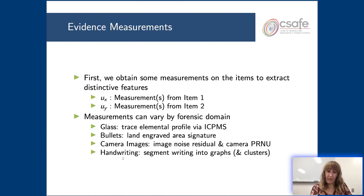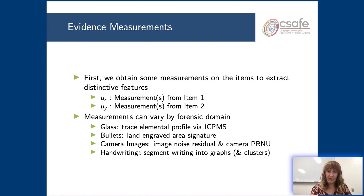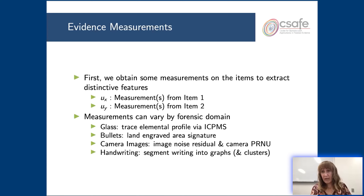For digital evidence, if you're determining whether a camera has taken two different pictures, you might compare the noise residuals of those images to get at what's called the camera fingerprint or the camera PRNU. For the rest of the webinar, we'll focus on handwriting — how we segment the writing into features we call graphs and how we use those to say whether or not two documents have been written by the same writer.